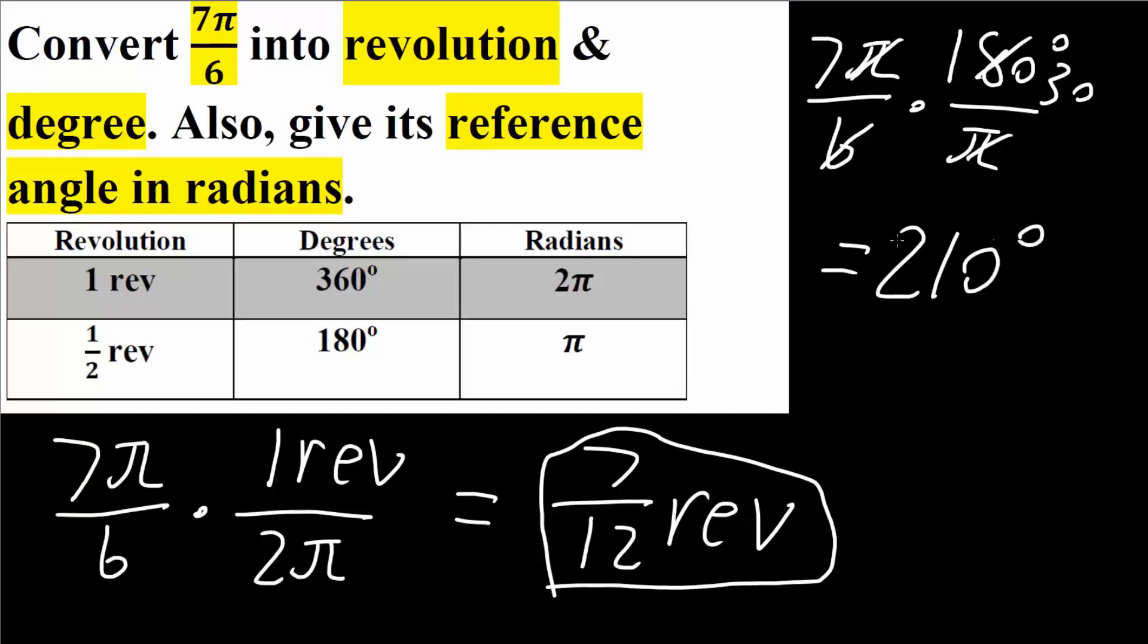So now we converted it from radians to degrees and we also converted radians into revolutions. The last thing is we want to get the reference angle, so I'm going to do a quick sketch. 7π over 6.